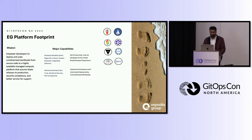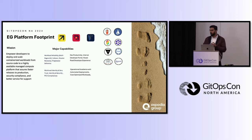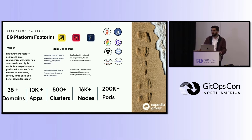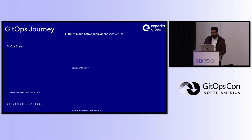We're using mostly Argo CD, CrossPlane, Teleport, Kyverno, Karpenter, and KEDA. Expedia Group comprises many different organizations like homeaway.com, vrbo.com, and hotels.com, all of which natively had different infrastructure layers. The team I'm part of is building a centralized platform as a product for all those infrastructure layers. In terms of footprint, we have 35 plus domains including cars, cruises, and flights, 10,000 plus apps, 500 plus clusters, 60,000 plus nodes, and 200,000 plus pods over AWS EKS.